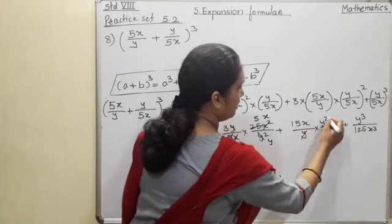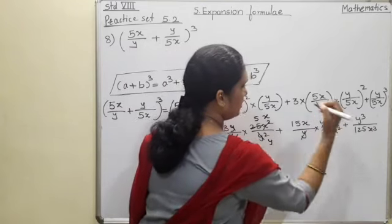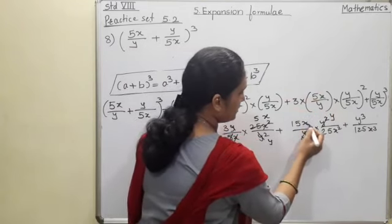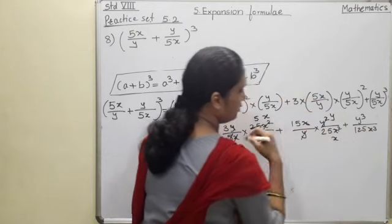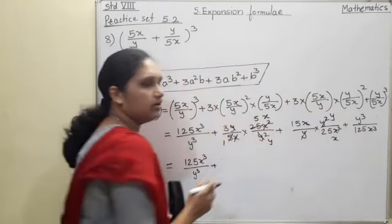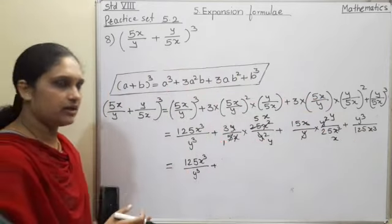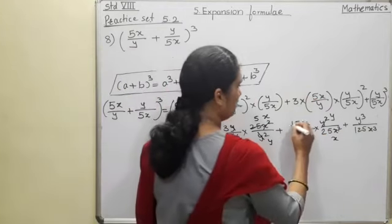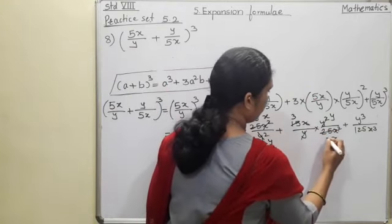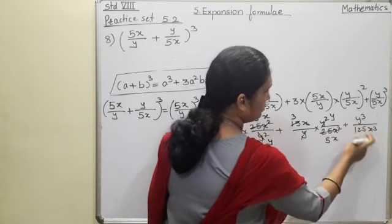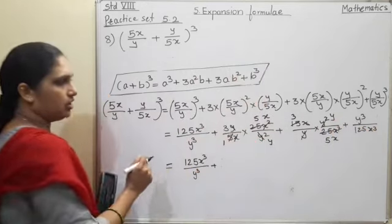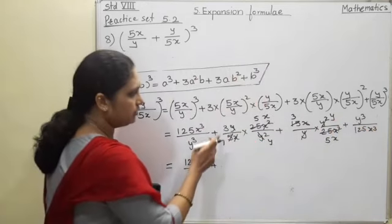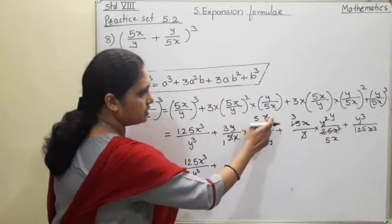Next is, again y, y cancelled, here y is remaining. x, x cancelled, here x is remaining. Now 15 and 25, both the numbers are there in 5's table, so we will do the reduction. Here no cancellation. Now the remaining numbers we will write it down. Here 3 and 5x is remaining.